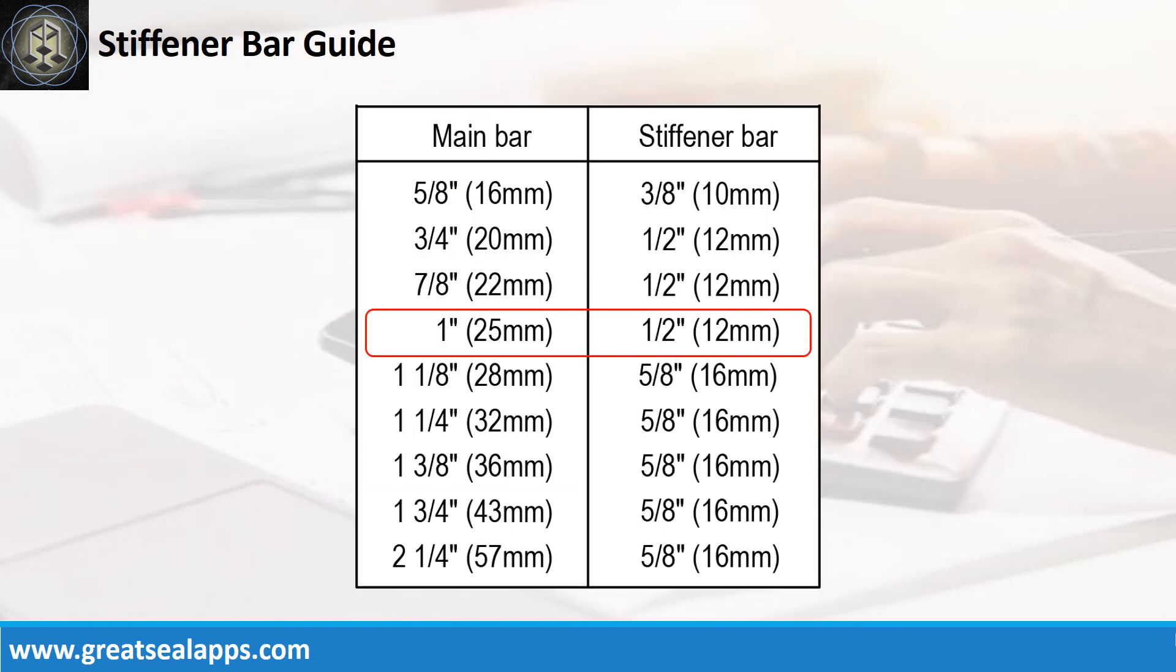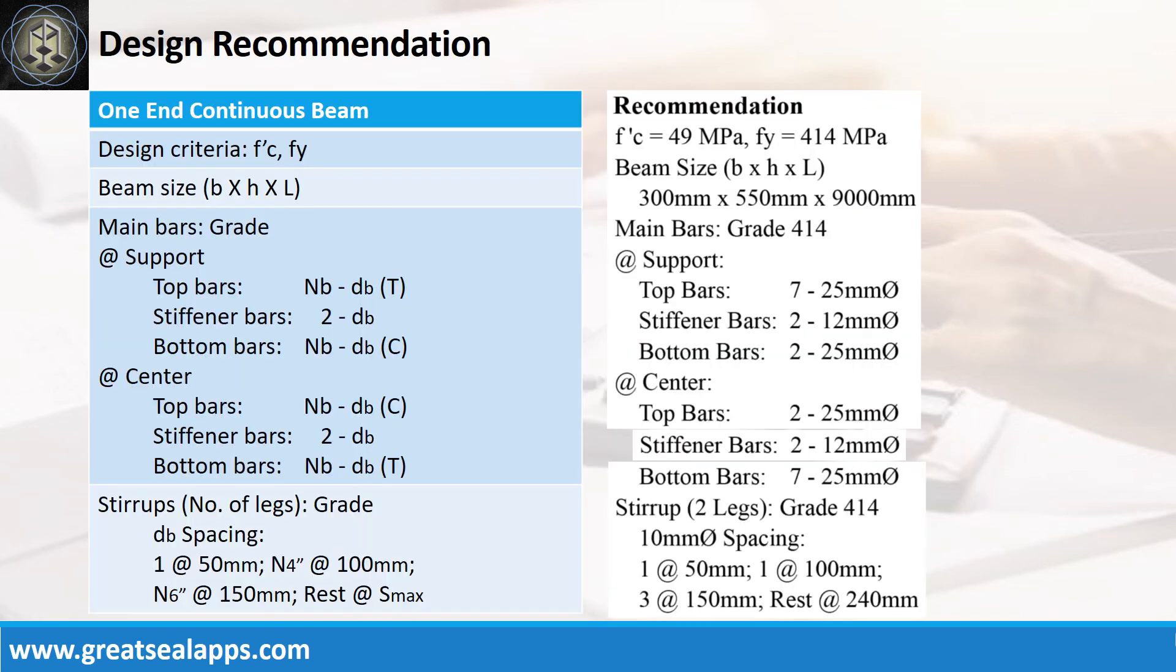For 25 mm main bars, use 12 mm stiffener bars. Design recommendation as follows. Fc prime equals 49 MPa, fy equals 414 MPa, beam size is 300 mm by 550 mm by 9000 mm, main bars of grade 414.